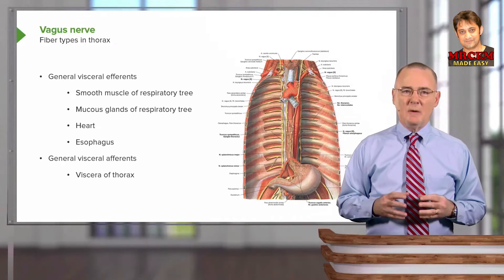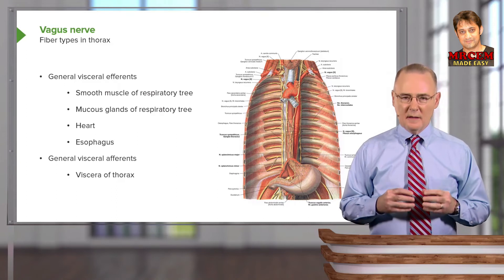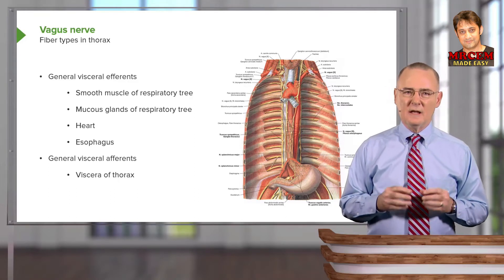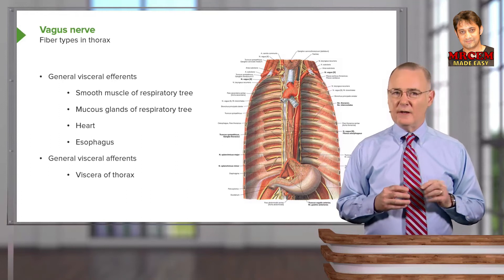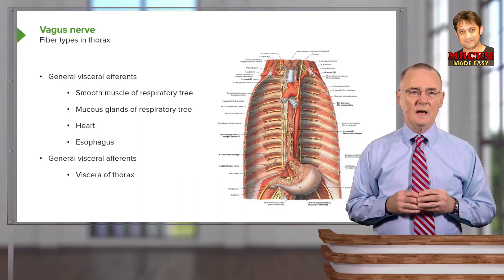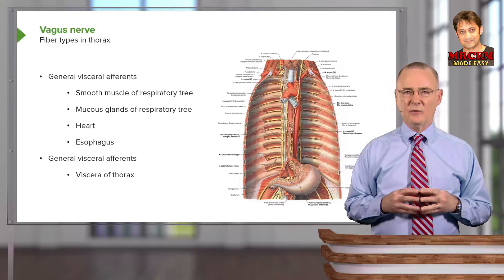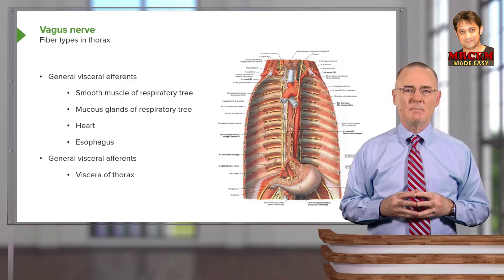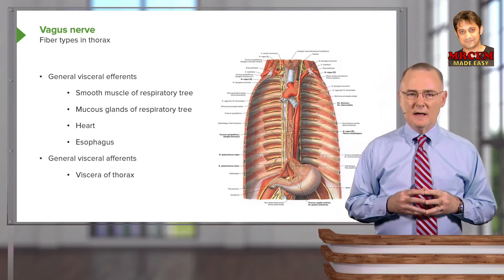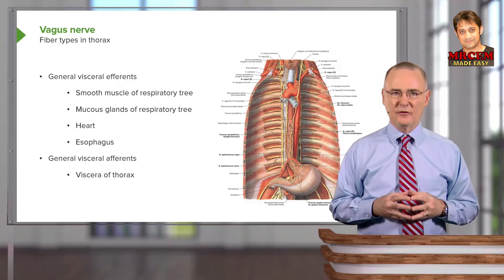The general visceral efferents innervate the smooth muscle associated with the respiratory tree, as well as mucus glands of the respiratory tree. The heart also receives distribution through this fiber type, and these same fibers are conveyed to the esophagus. Sensory fibers from the thoracic viscera constitute the general visceral afferents of the vagus nerve.